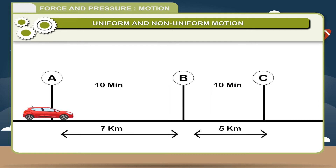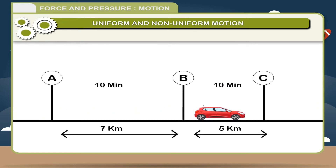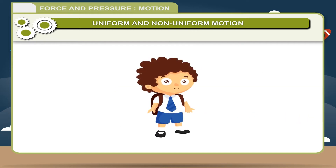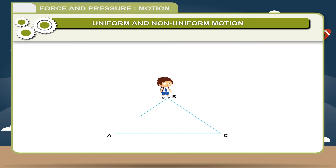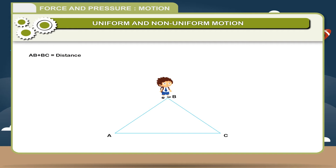Distance: the length of the path travelled by a body in a certain interval of time is called distance. For example, suppose a person has to reach from point A to C and goes through point B. Then the total path covered is AB plus BC equals distance. It is a scalar quantity because it has magnitude only and no particular direction.